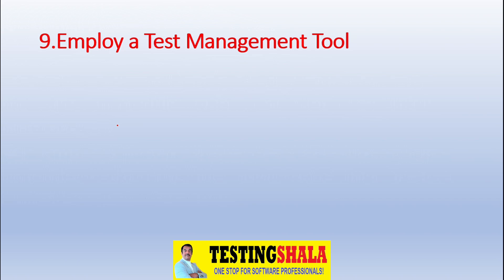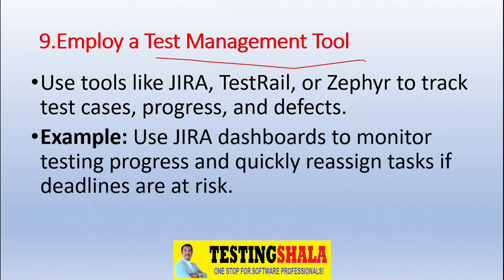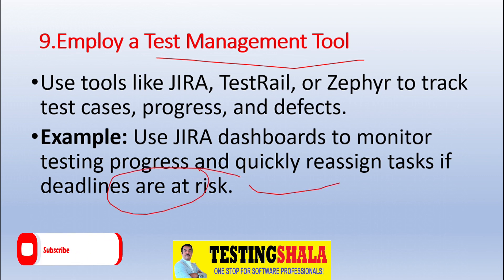The ninth method is adopting a test management tool like Jira, TestRail, or Zephyr to track all test deliverables including test cases, their progress, and defects. These tools provide a complete dashboard to monitor testing progress and allow you to reassign tasks if deadlines are at risk.